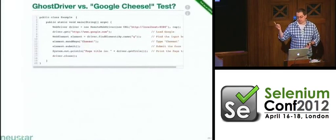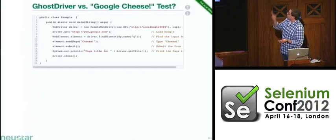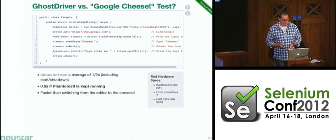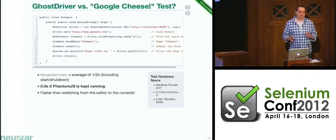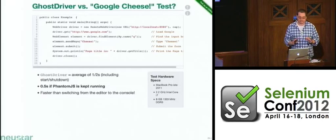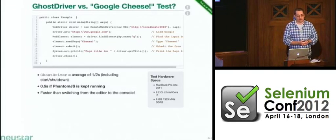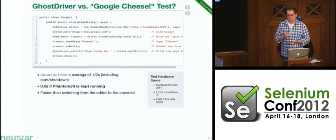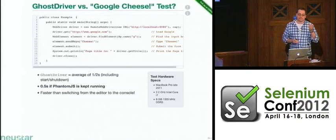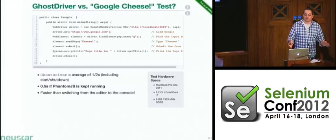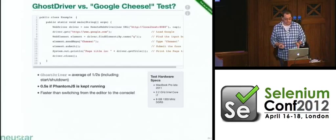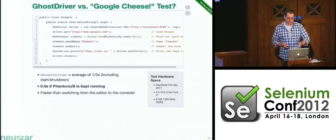Same test again — the only thing I changed is that I'm connecting to the remote WebDriver. In GhostDriver, it takes between one and two seconds, and how fast it is depends on your network. I can go down to around half a second to run this test when I use it in server mode — meaning I don't have to start and stop PhantomJS every time. I just leave it running and keep sending tests to it. When I was coding it, it was actually faster than switching between the code editor and the console.